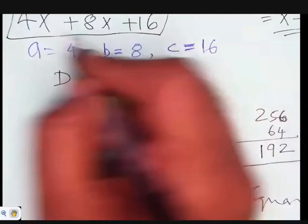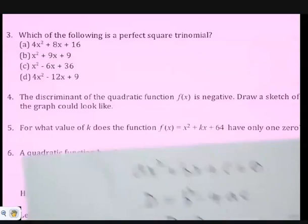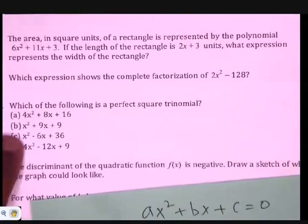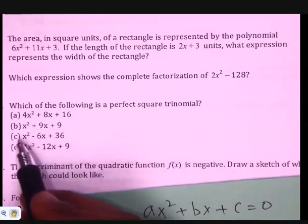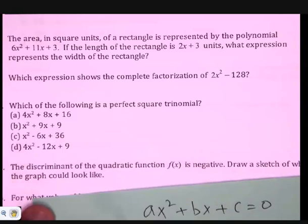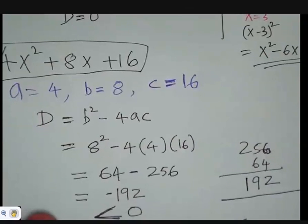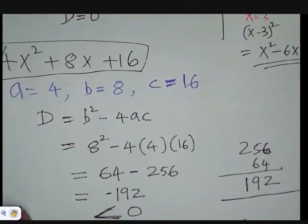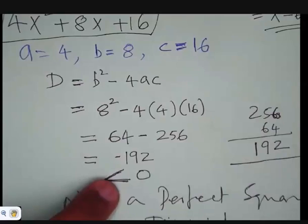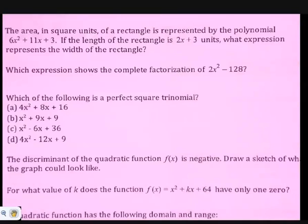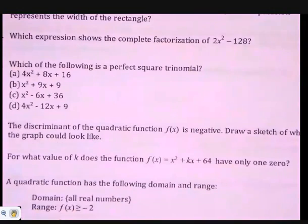Our thing here is to verify if these are perfect square trinomials. Look for a, b, and c. Follow the same process: identify a, b, c and look for the discriminant. If the discriminant is equal to zero, it's a perfect square trinomial.